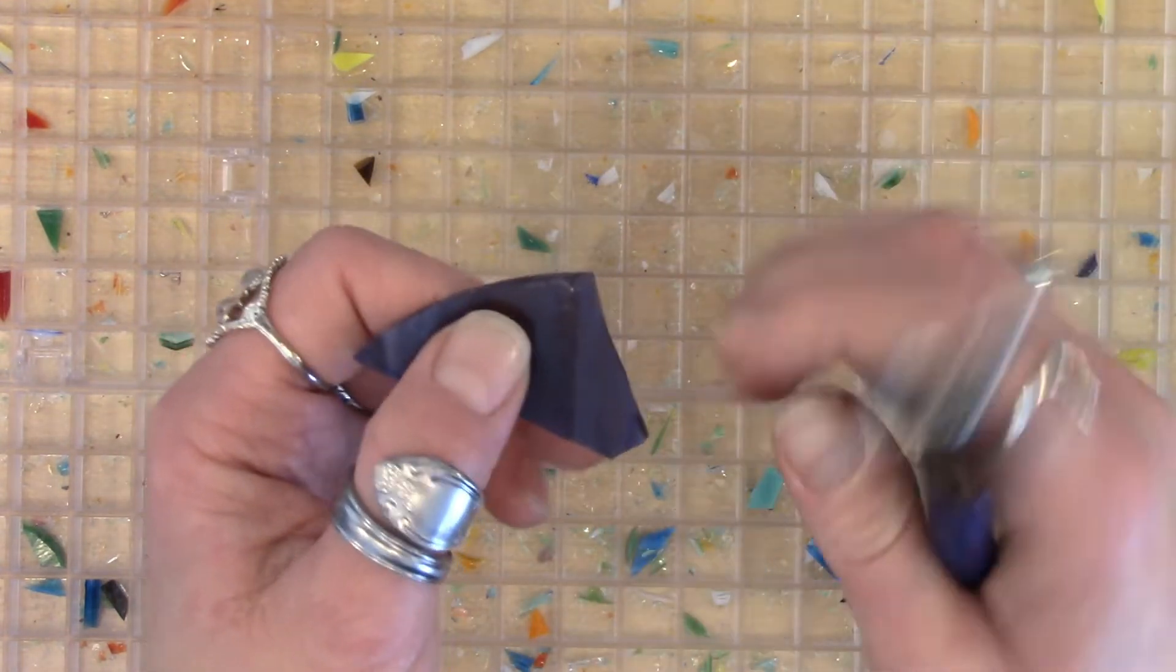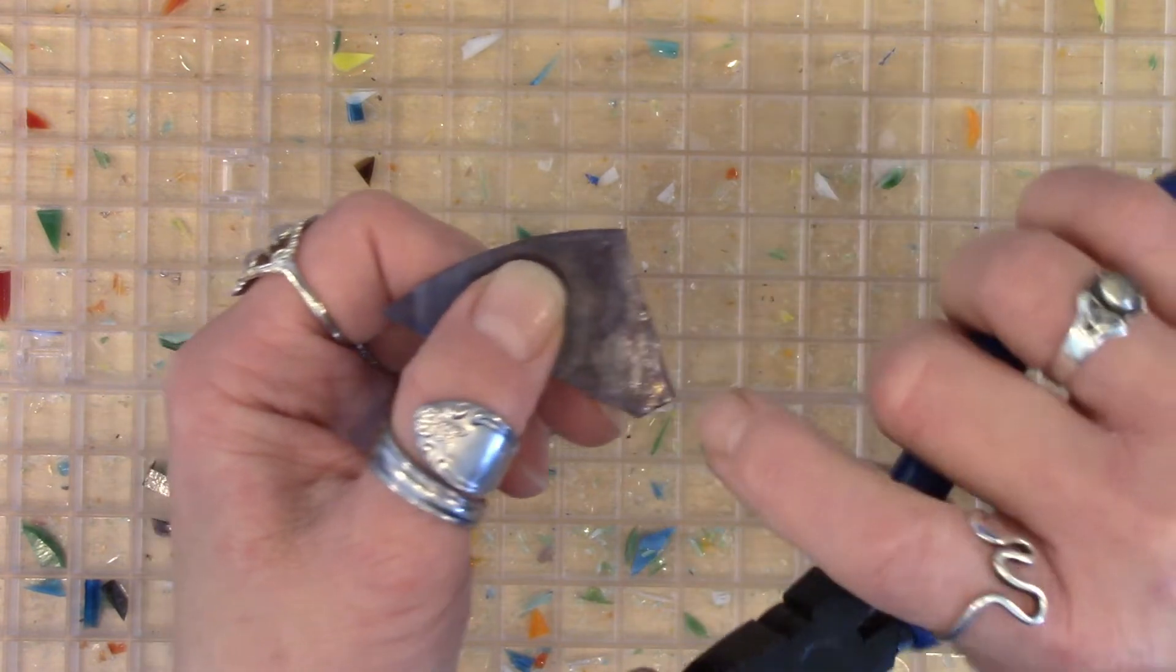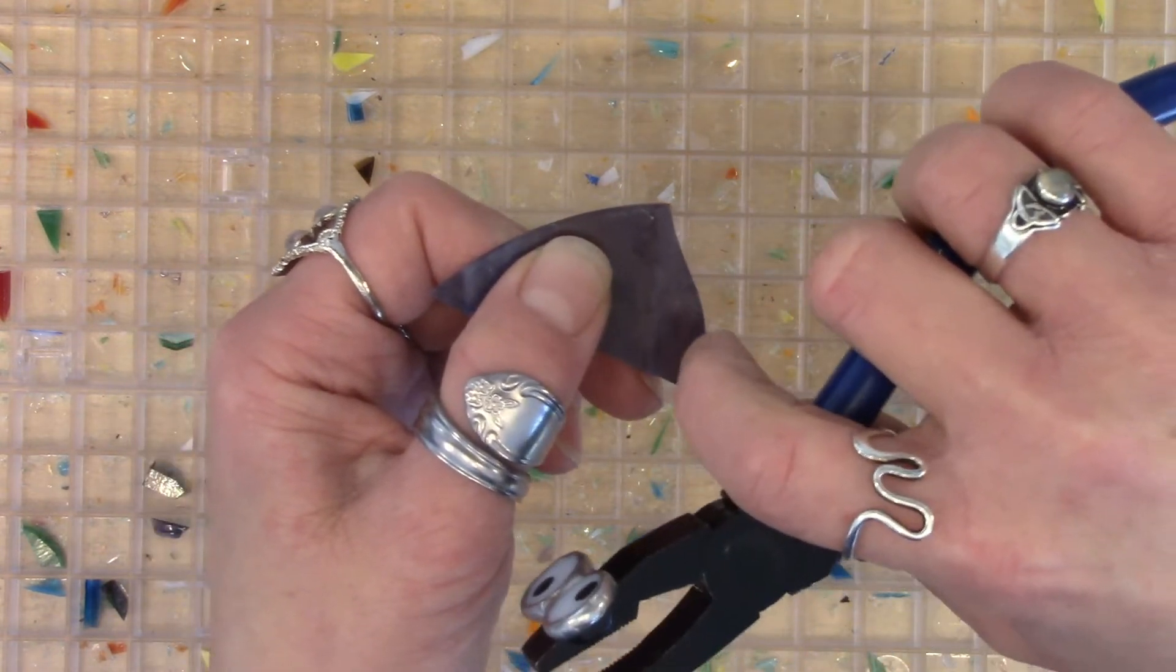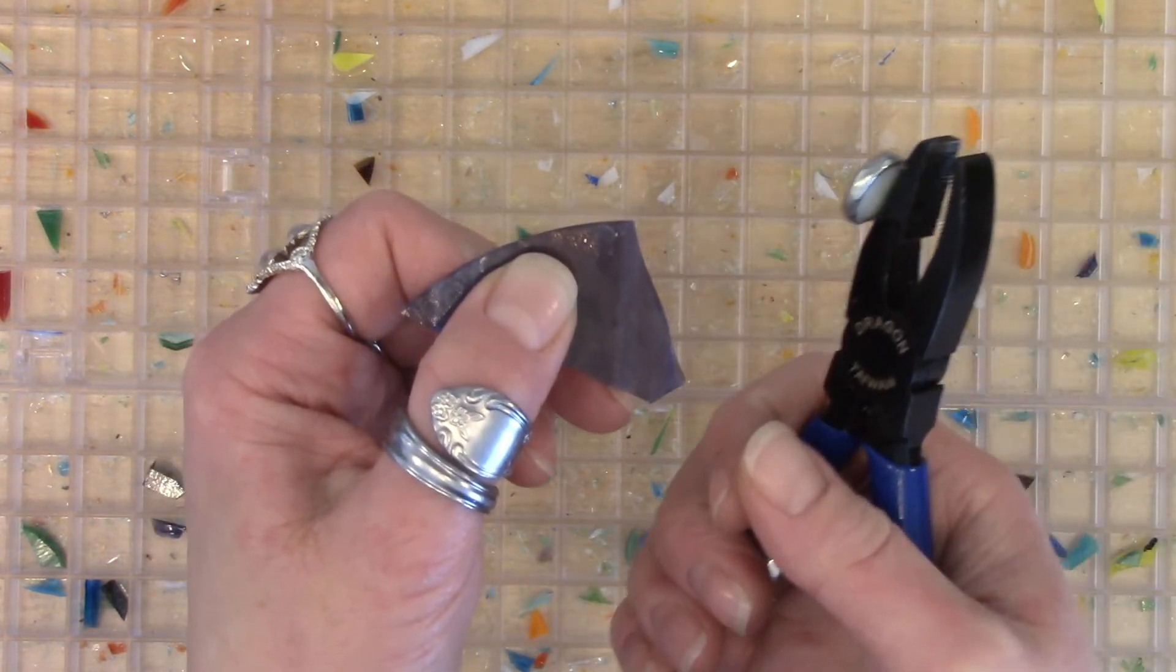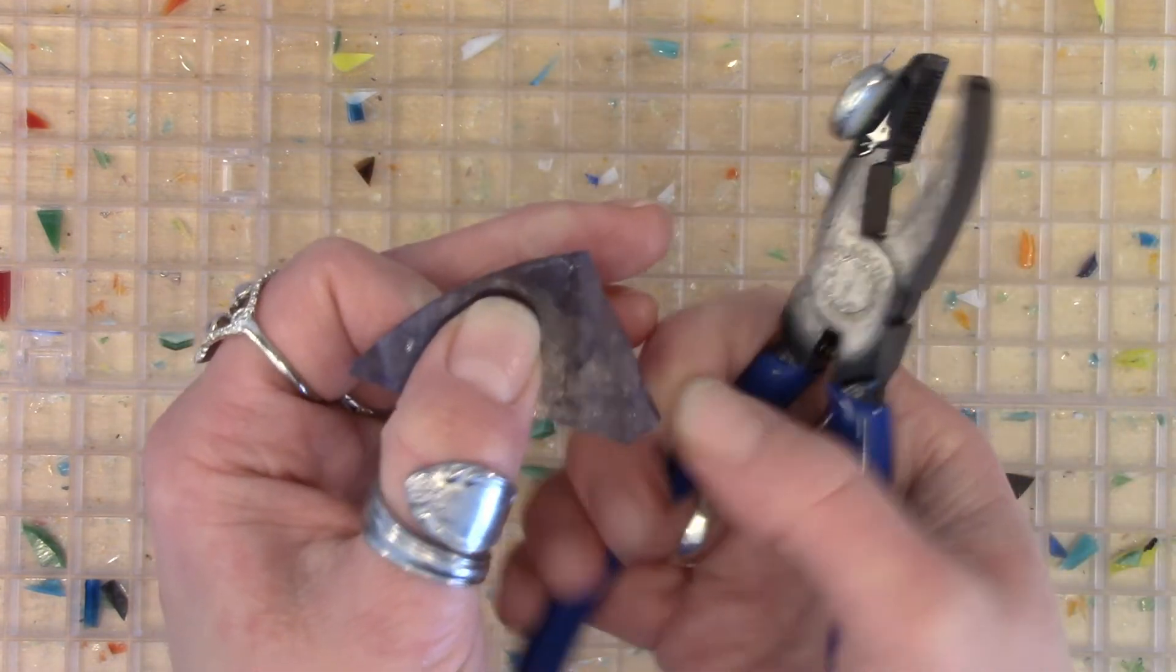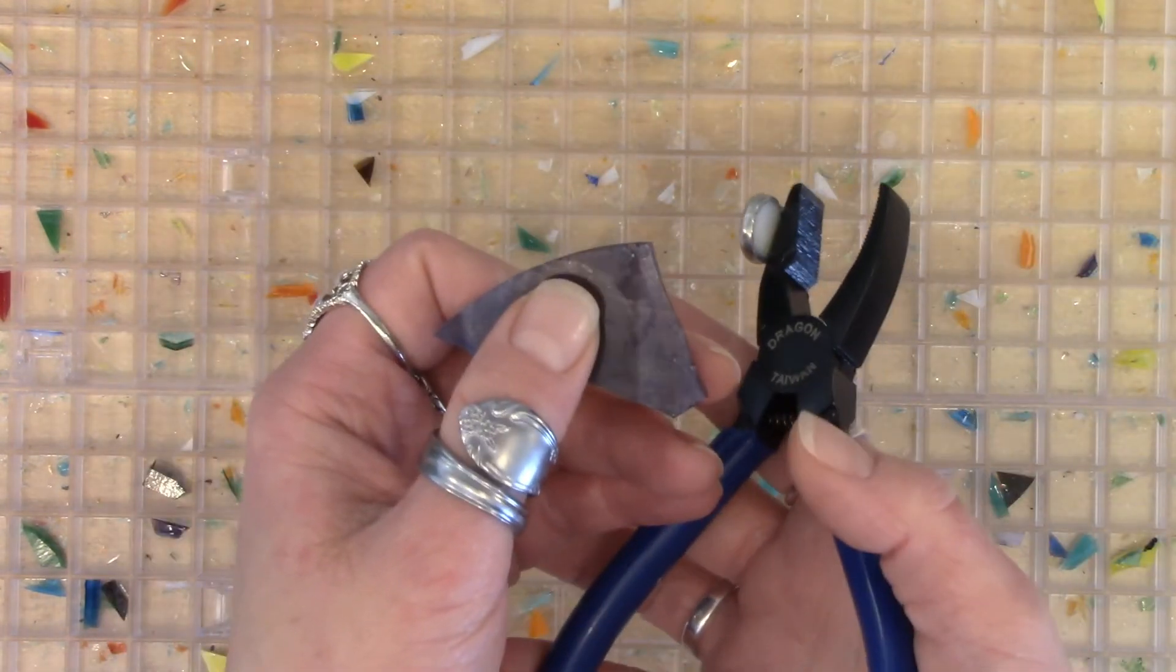The second reason is that sometimes it'll actually take little chunks or chips inside of your pattern piece. Sometimes you can grind those out, other times you have to end up recutting. But I'll show you how to do it.